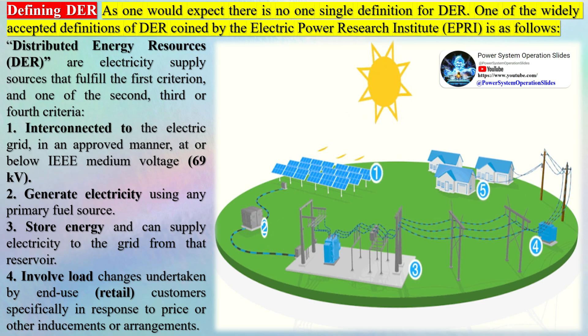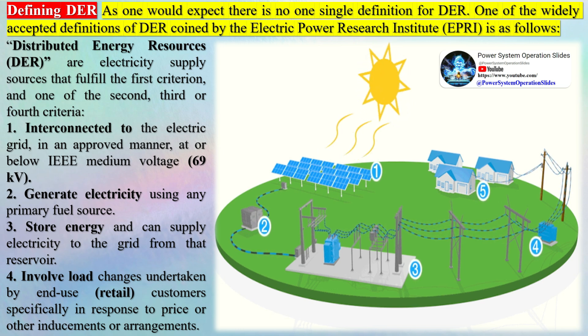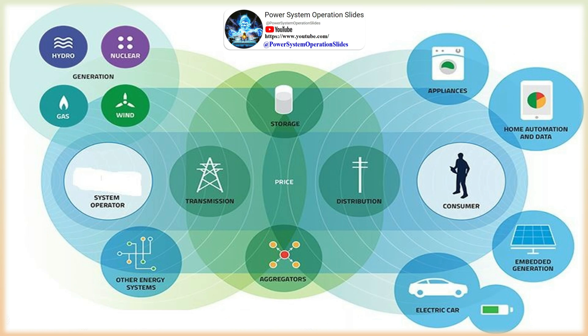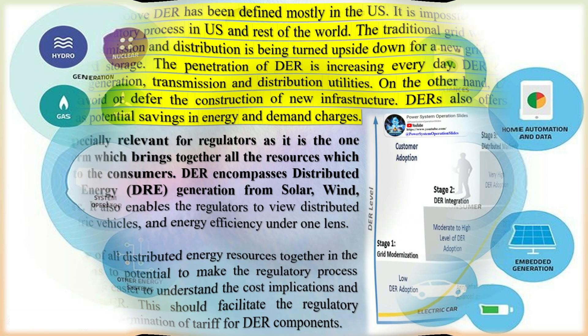Lawrence Berkeley National Laboratory (LBNL) was one of the first organizations to talk about DER. In the series of papers under Future of Electric Utility Regulation, LBNL introduced DER to encompass clean and renewable distributed energy systems, distributed storage, demand response, and energy efficiency. The California Public Utilities Code, the New York Public Service Commission, and the Massachusetts Department of Public Utilities all understand DER similarly. Massachusetts adds microgrids and energy management systems under DER. Remember that only clean and renewable generation constitute DER — microgrids with diesel generators cannot be counted as a distributed energy resource.